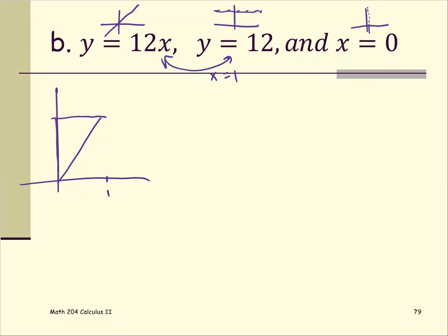Since these three graphs are not too bad to compute or to identify the intersection point, this is y equals 12, this is y equals 12x, and this is x equals zero.